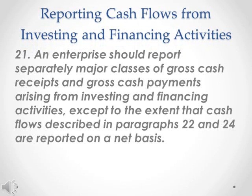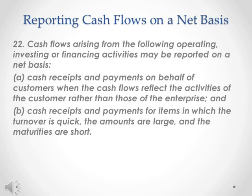Reporting cash flows from investing and financing activities, Paragraph 21. An enterprise should report separately major classes of gross cash receipts and gross cash payments arising from investing and financing activities, except to the extent that cash flows described in paragraphs 22 and 24 are reported on a net basis. Paragraph 22. Cash flows arising from the following operating, investing, or financing activities may be reported on a net basis: A. Cash receipts and payments on behalf of customers when the cash flows reflect the activities of the customer rather than those of the enterprise; and B. Cash receipts and payments for items in which the turnover is quick, the amounts are large, and the maturities are short.